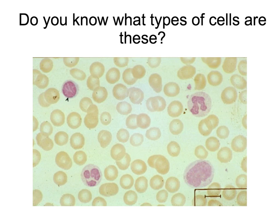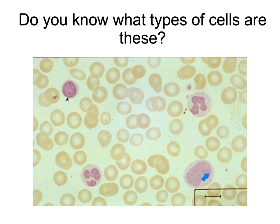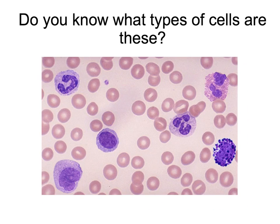Let's see how you did on the first practice slide. Hopefully you identified the small pink cells as erythrocytes — use the term erythrocyte rather than red blood cell. Each of the larger structures is a leukocyte or white blood cell. The cell with the very large nucleus is the lymphocyte. There is also a monocyte, and the cells with the multi-lobed, pearl-strung nucleus are the neutrophils.